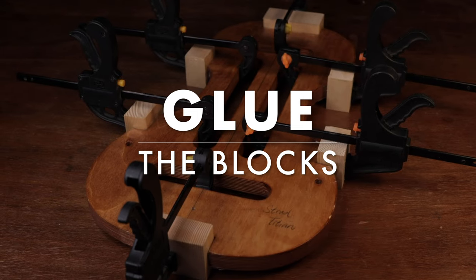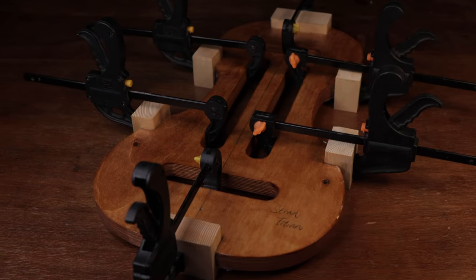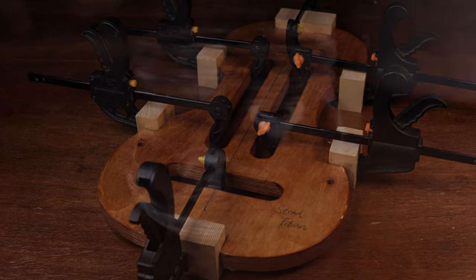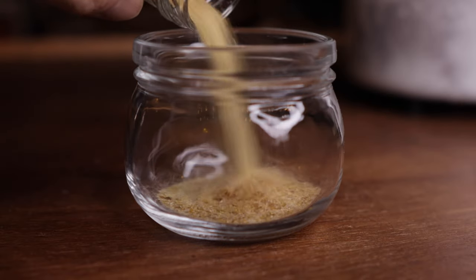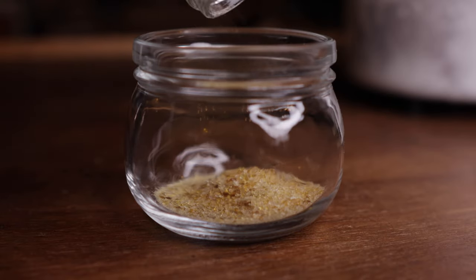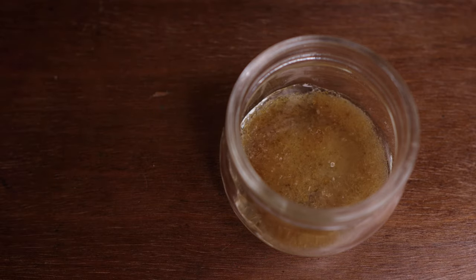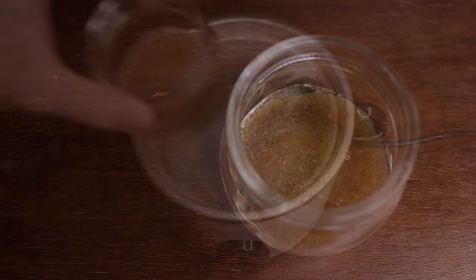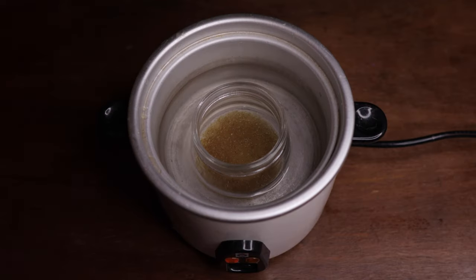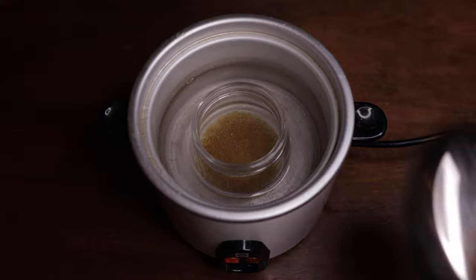When you have your blocks, your underlying sticks, and the form ready, then let's cook the glue. Put the glue into a glass container and put some water in. Hide glue first or water first, doesn't matter. The ratio between glue and water is around 1 to 1. It's not easy to tell you how much exactly, you know it by experience.